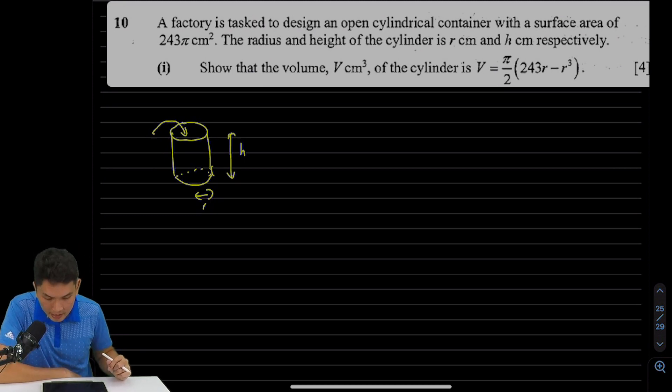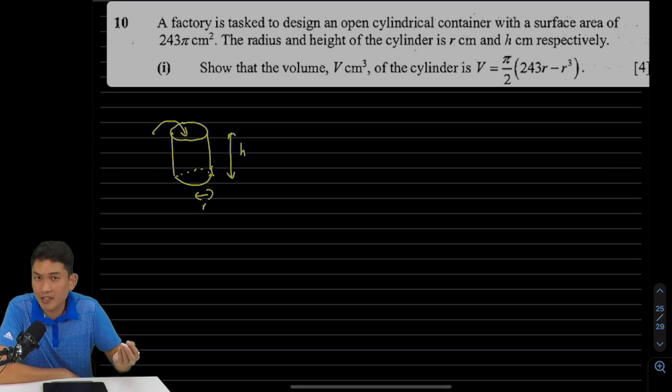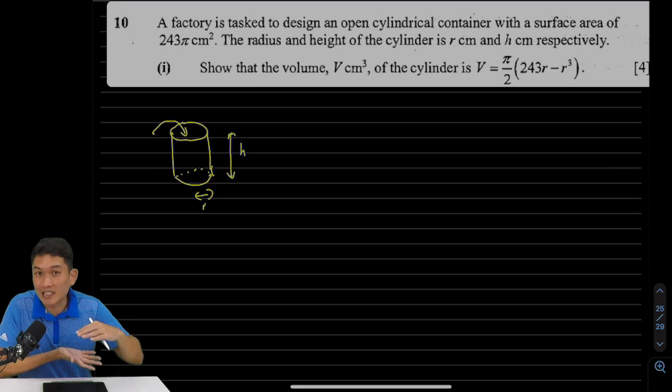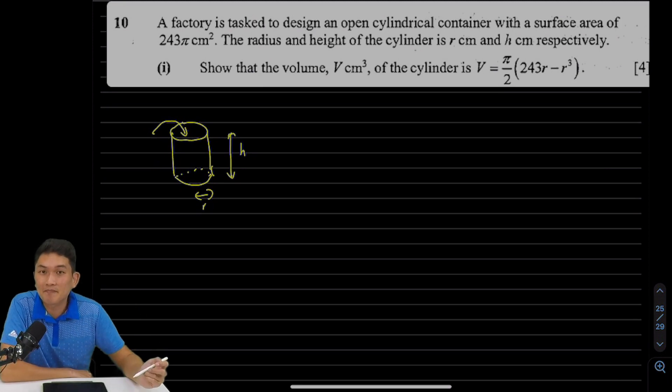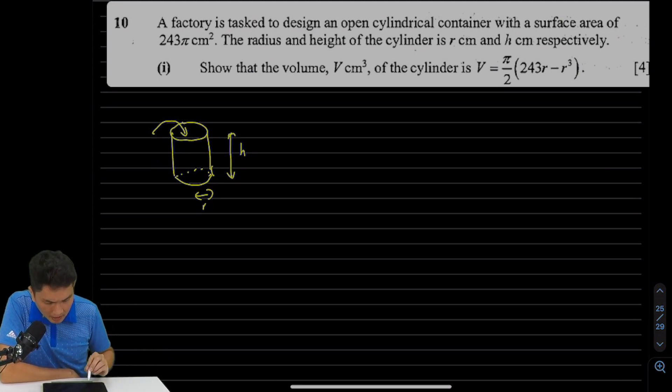So let's take a look at this question. It says that a factory is tasked to design an open cylindrical container. What is that? It means you have a cylinder, you put things inside, of course you want to keep the top open. That is an open container. Say you want to sell baked beans or tennis balls—you want to be able to put those things inside the can before you seal it, pack it and send it away. So, open cylindrical container.